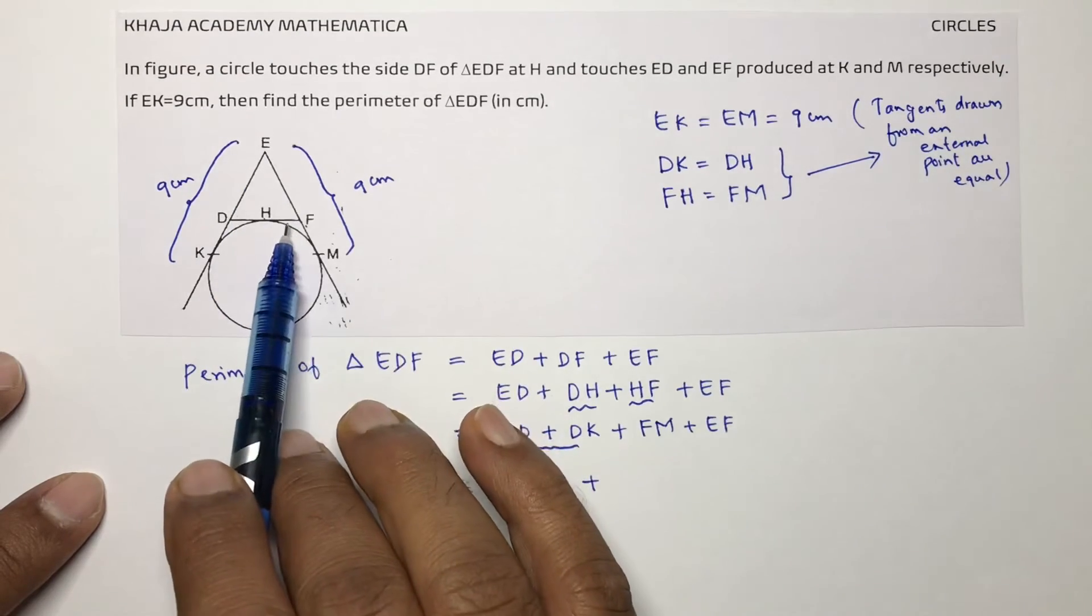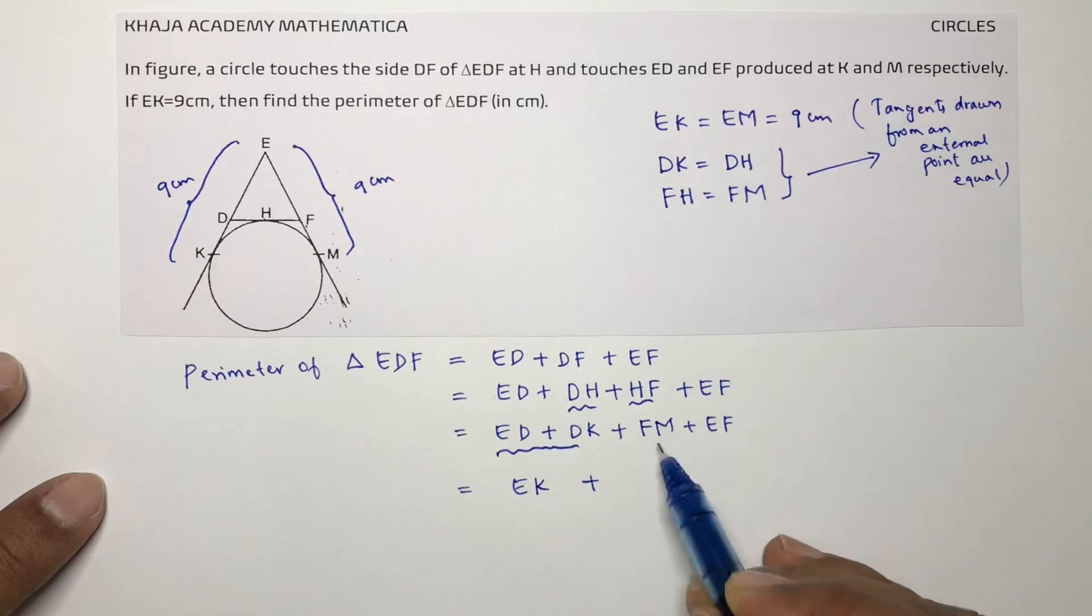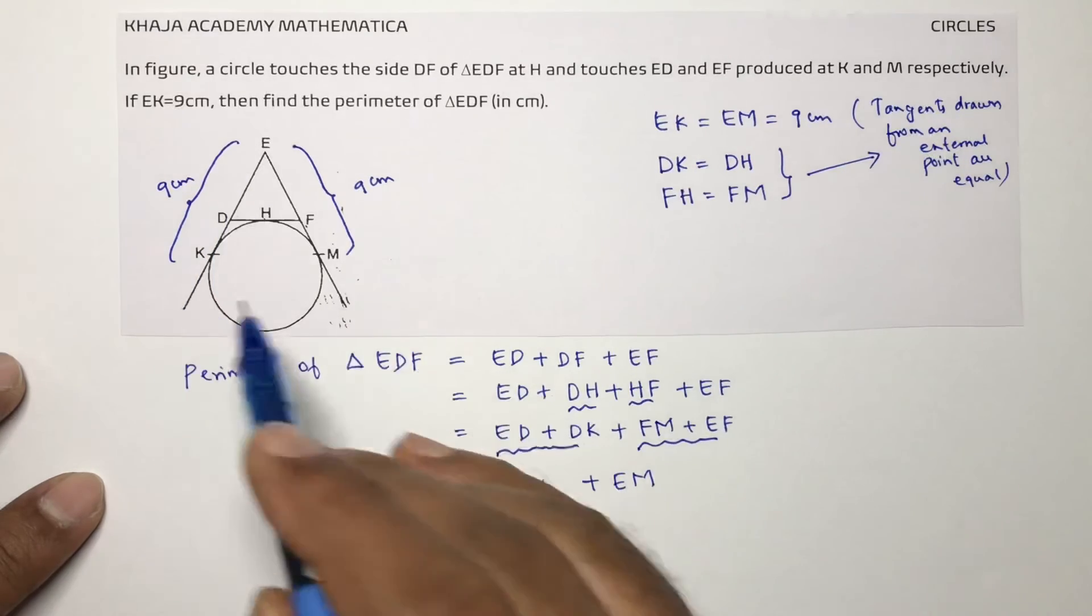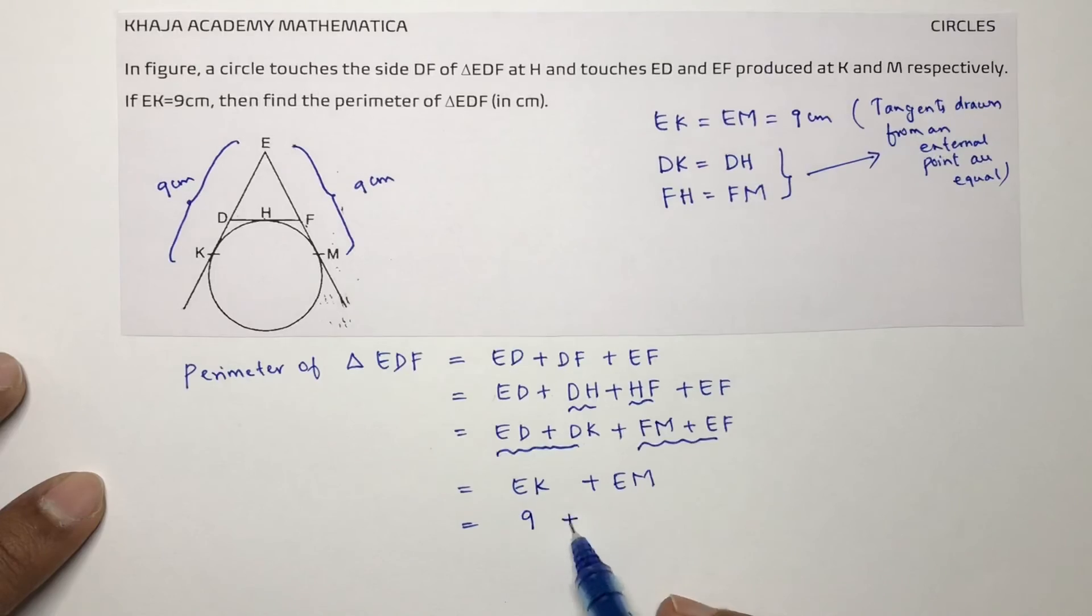EF plus FM, this total will become EM. But EK is 9 given, and EM is also 9 because of the tangents drawn from an external point are equal. So 9 plus 9 is 18. So the perimeter of triangle EDF is 18 cm.